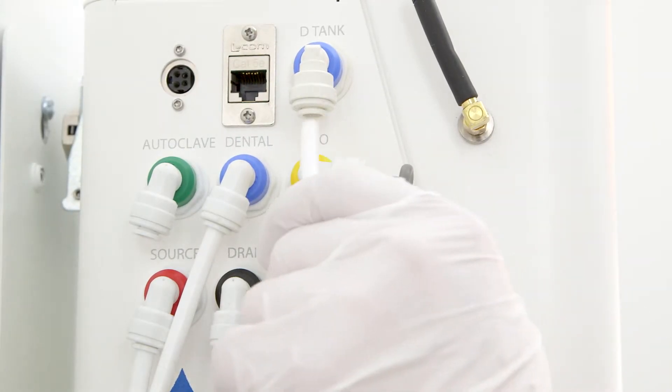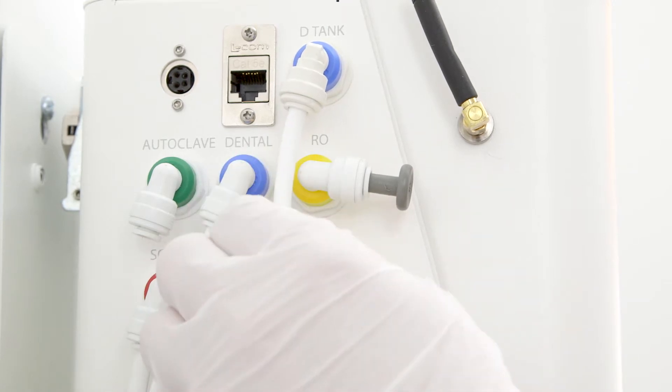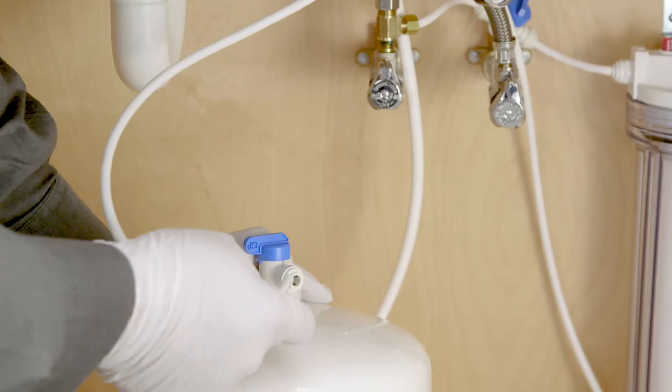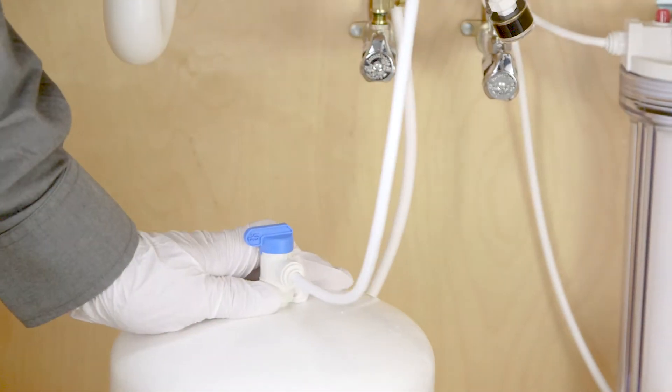D-tank port. Now run quarter inch tubing from the blue D-tank port on the system to the quarter inch tank ball valve on the dental water storage tank.